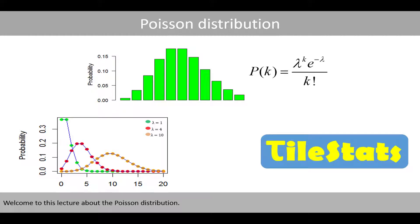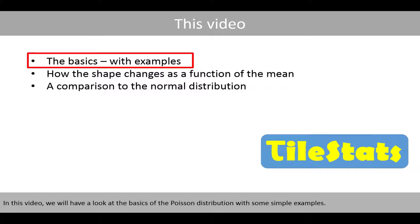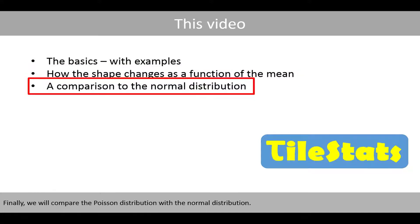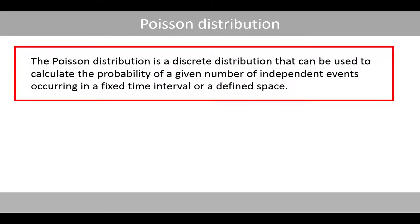Welcome to this lecture about the Poisson distribution. In this video, we'll have a look at the basics of the Poisson distribution with some simple examples. We'll then see how the shape of the distribution changes as a function of the mean. Finally, we'll compare the Poisson distribution with the normal distribution. The Poisson distribution is a discrete distribution that can be used to calculate the probability of a given number of independent events occurring in a fixed time interval or a defined space.